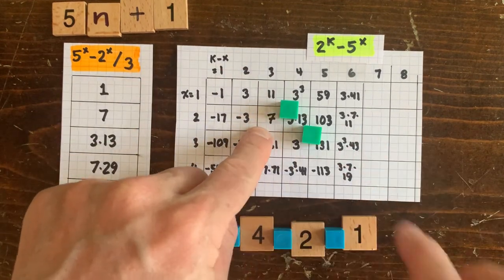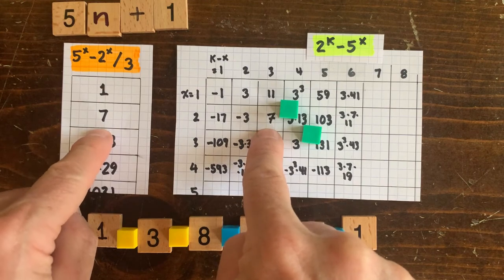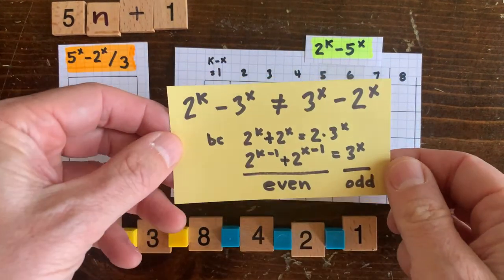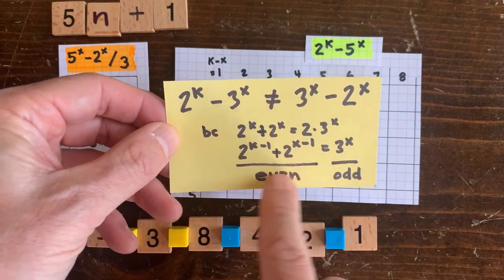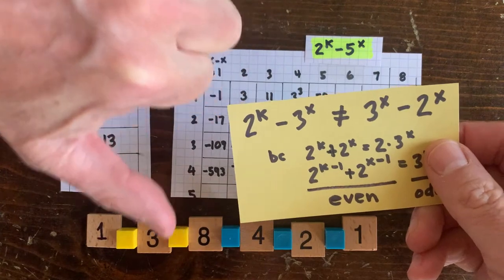And by the way, for 3n plus 1, we previously proved that the denominator could never equal the numerator unless x equals 1. And that was an easy proof involving evens and odds. But this proof doesn't carry over to the 5n plus 1 problem.